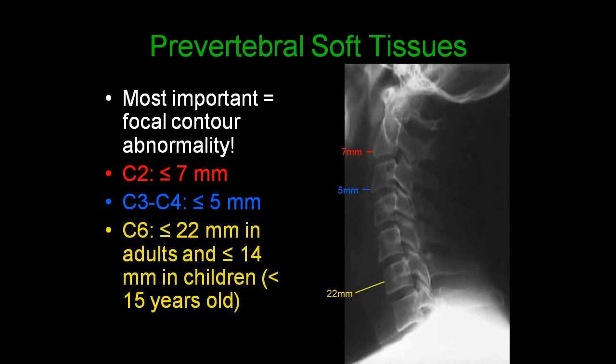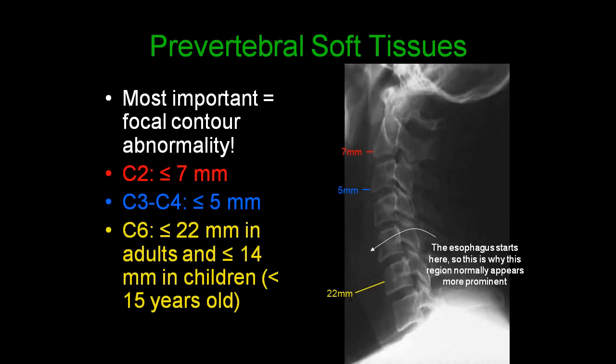When looking at the prevertebral soft tissues, the most important thing to look for is a focal contour abnormality. At the level of C2, the prevertebral soft tissue should be less than or equal to 7 mm. At the C3-C4 level, less than or equal to 5 mm. At the C6 level, less than or equal to 22 mm in adults and 14 mm in children under 15 years old. At the C5-C6 level, there is a natural slight increase in size because the esophagus starts in this region.